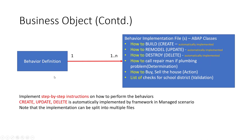Once we have the behavior definition file with all the listed behaviors, we want to implement them in code. Create, update, and delete are automatically implemented — just list them in the behavior definition file and they come for free. But for determination, actions, and validation, you have to write custom code, because the app doesn't know your custom business logic — like knowing to call the repairman when a value changes.